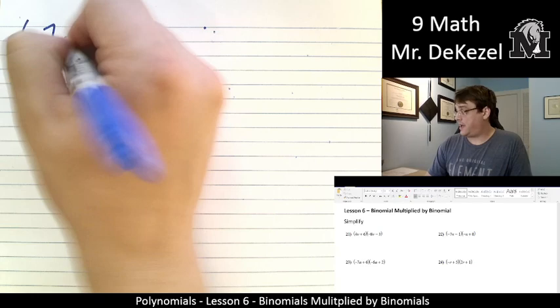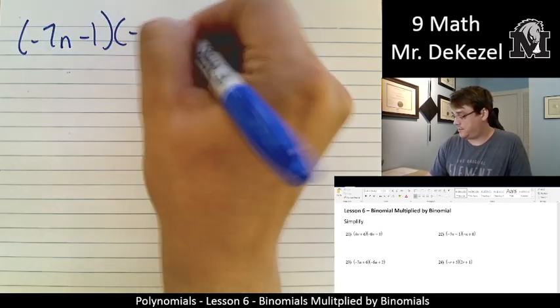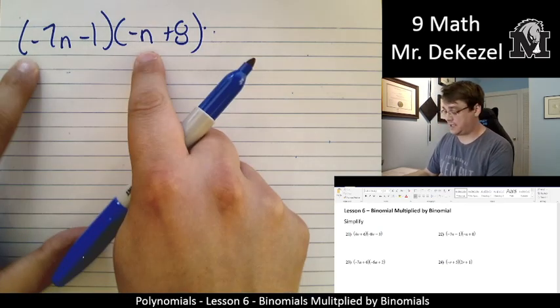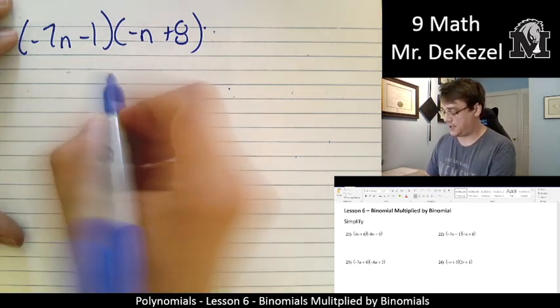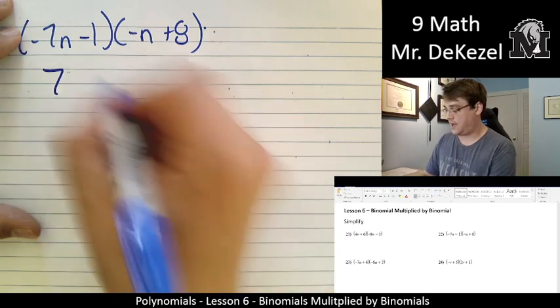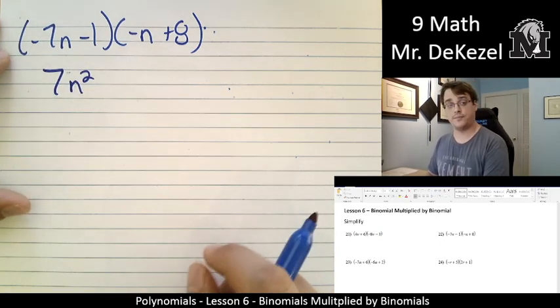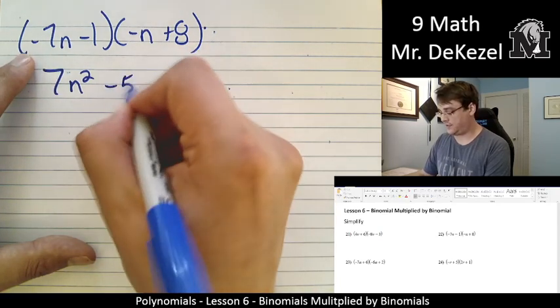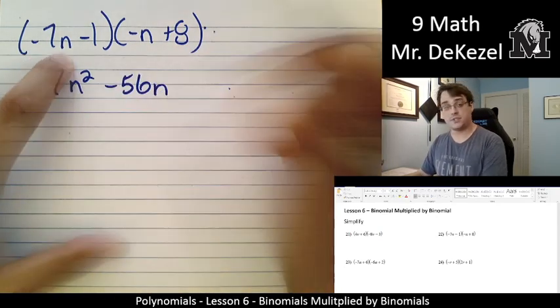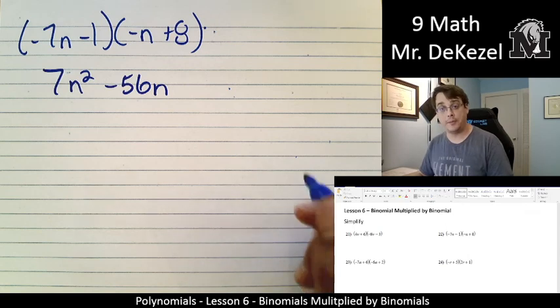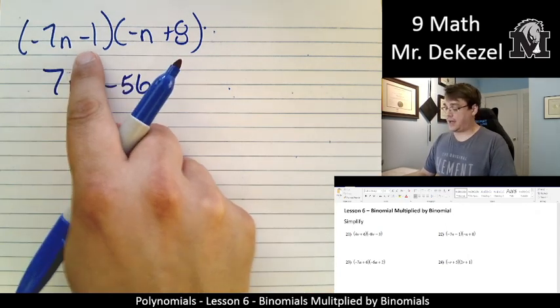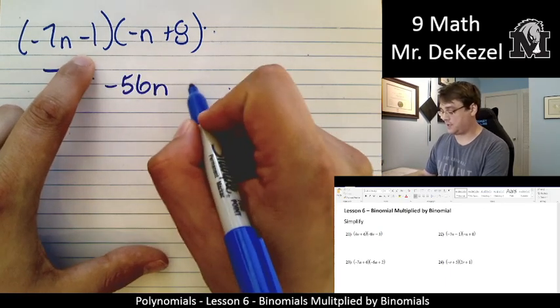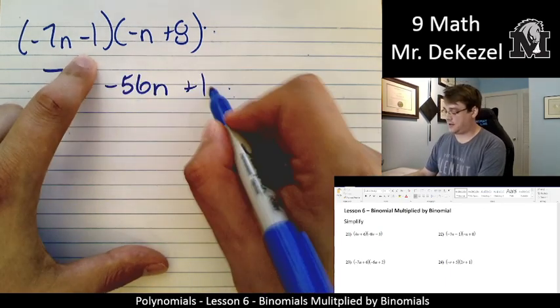(-7N - 1)(-N + 8). The first terms multiplied together. -7 times -1. That's just 7N². N times N is N². Outside terms, -7 times 8. That's -56N. N just comes along because there's nothing to multiply it by. We have the inside terms. So -1 times -1 is just positive 1. And then the N comes along.